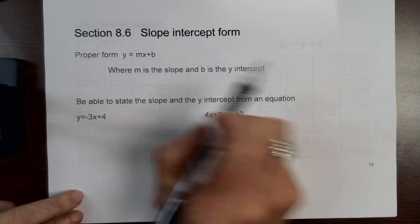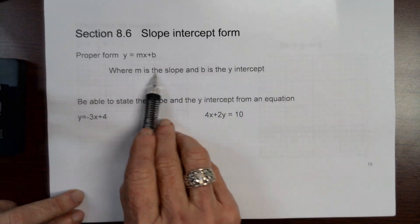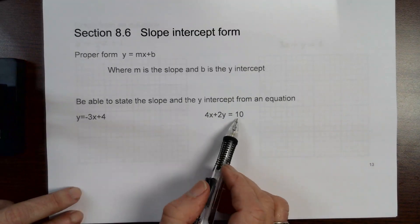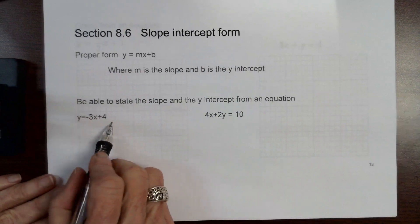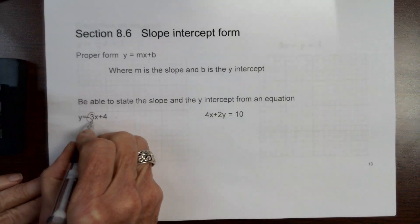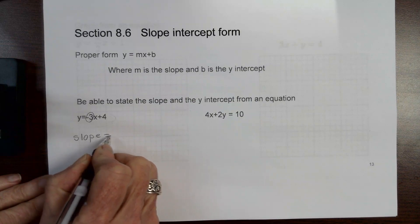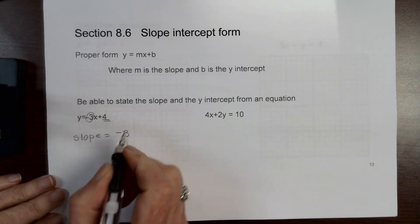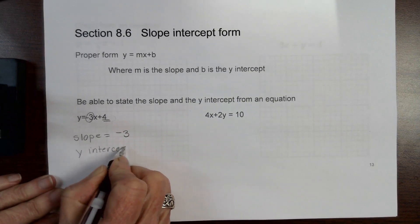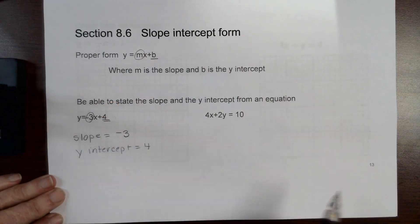Section 8.6 has to do with slope-intercept form. The proper form is y equals mx plus b, where m is the slope and b is the y-intercept. For an equation already in this form, the m value is the slope — so slope equals negative three — and the y-intercept is the b value, so the y-intercept equals four.